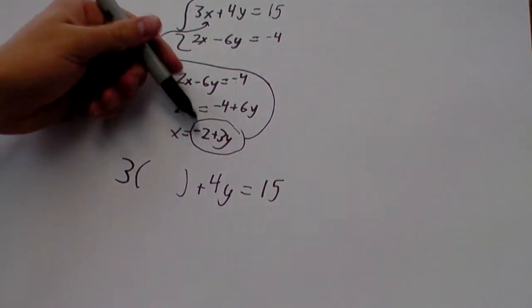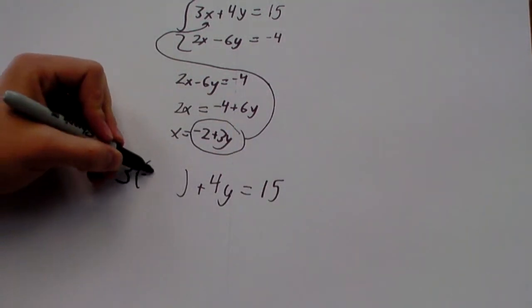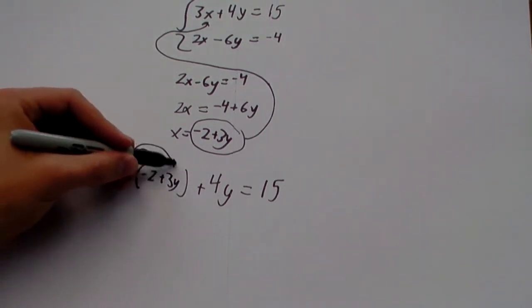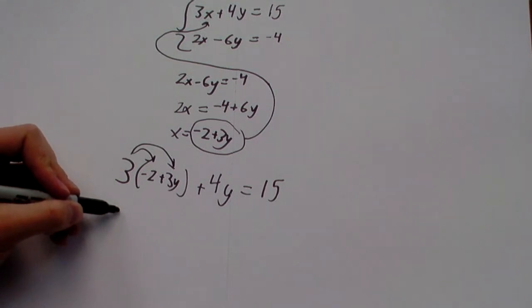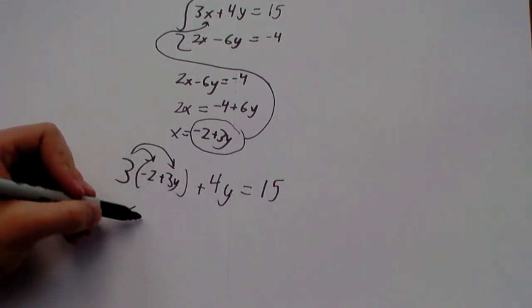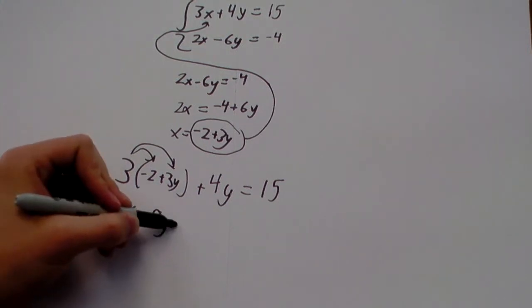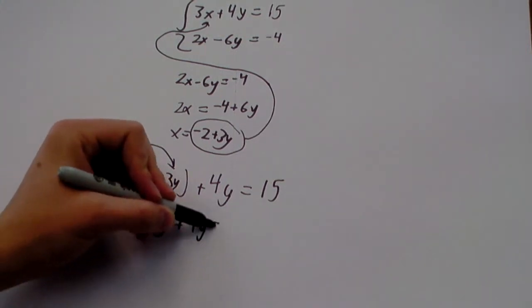And we know that x is equal to negative 2 plus 3y. So, negative 2 plus 3y goes in the parenthesis. And we just distribute. 3 times negative 2 is negative 6. 3 times 3y is 9y. So, we get negative 6 plus 9y plus 4y equals 15.